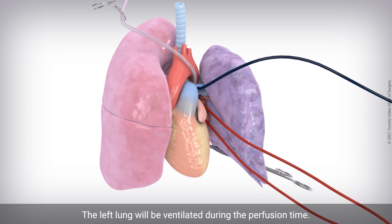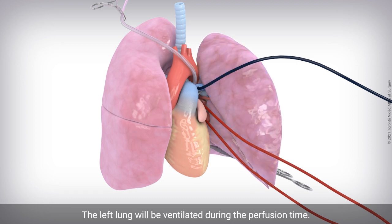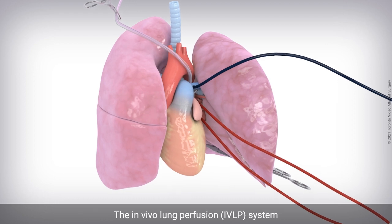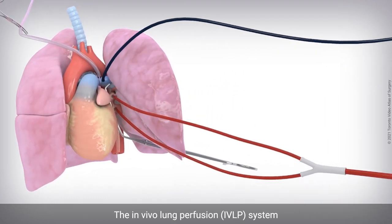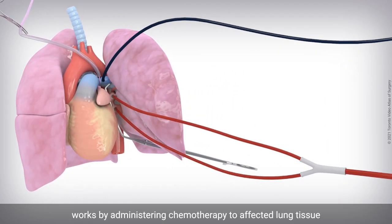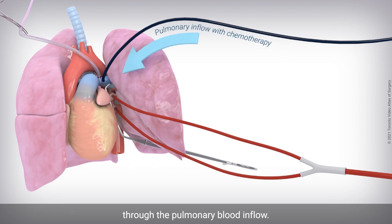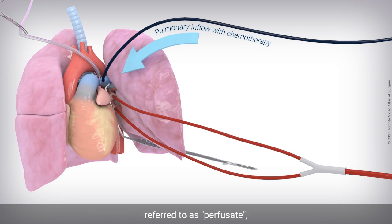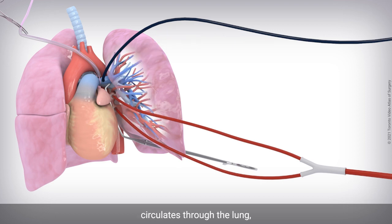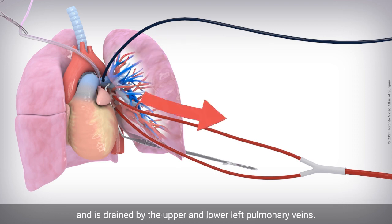The left lung will be ventilated during the perfusion time. The in vivo lung perfusion system works by administering chemotherapy to affected lung tissue through the pulmonary blood inflow. Collected blood treated with a high content of chemotherapy, referred to as perfusit, circulates through the lung tissue and is drained by the upper and lower left pulmonary veins.